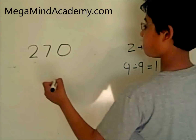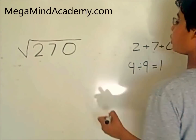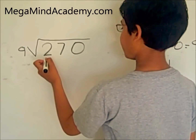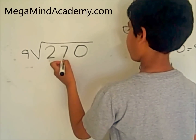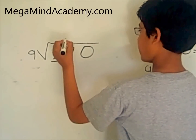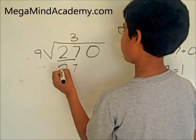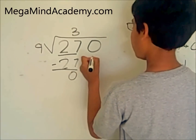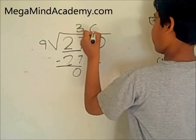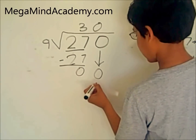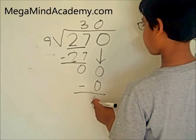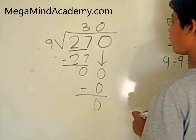Let's see if we're correct. 270 divided by 9. Since 2 is smaller than 9, we go on to the next digit, 7, and that becomes 27. And 9 times 3 equals 27. You subtract 27 from 27 and you get 0. Now you bring down the next digit. 9 times 0 equals 0, so you subtract and get 0. Since this 0 is the remainder, 270 is equally divisible by 9.